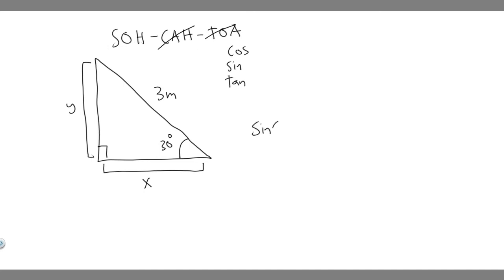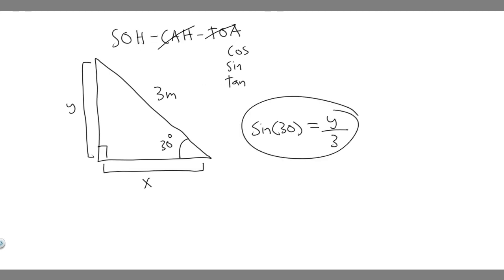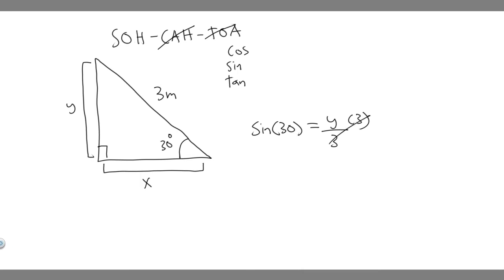What you want to do is take the sine of your angle — in this case 30 degrees — and set it equal to the opposite over the hypotenuse. The opposite I denote as y, over H which is 3. Now we have an equation with one variable, y. If we multiply both sides by 3, we get y equals 3 times the sine of 30. You can plug this into your calculator — make sure it's in degrees — and you'll get 1.5.